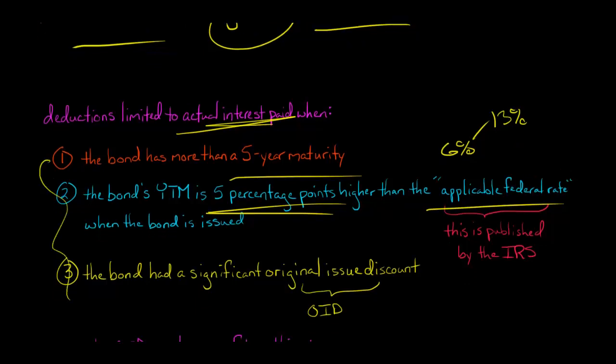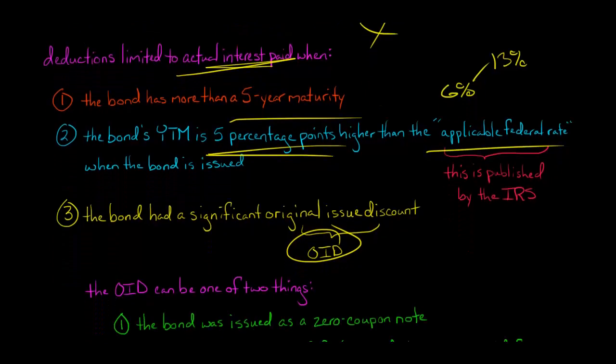If you have all three of these things, then there's going to be a limitation where the issuer of that bond cannot take any deductions for interest expense until it actually pays out interest. But let me go into this OID, the original issue discount, in more detail.